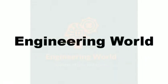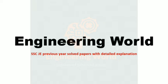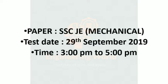Hey guys, welcome to the Engineering World. Here is the SSJ previous year paper with detailed explanation. Subscribe to the channel and support my work. This is the SSJ paper for the mechanical branch. The exam date is 29 September 2019 and the time is 3 PM to 5 PM.